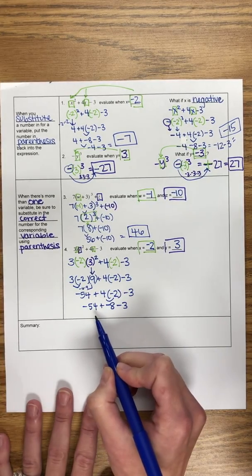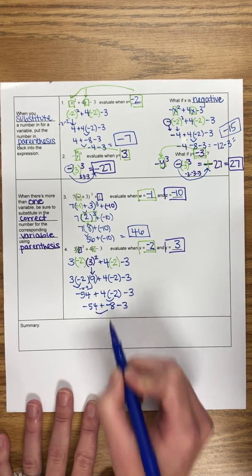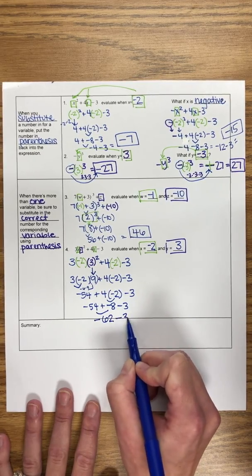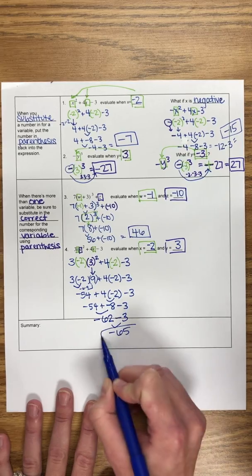So now I have negative 54 plus negative 8 minus 3. Negative 54 plus negative 8 is negative 62. And then minus 3 gives me an answer of negative 65.